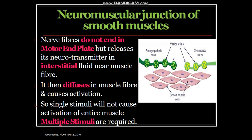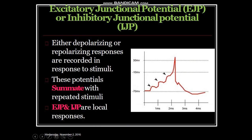Neurotransmitters — acetylcholine or norepinephrine — diffuse into the muscle fibers and cause activation. A single stimulus will not cause activation of the entire muscle; multiple stimuli are required for activation of the smooth muscle cells. This results in either an excitatory junctional potential or an inhibitory junctional potential. Looking at the graph: this is the time axis, this is the voltage — showing either depolarization or repolarization.